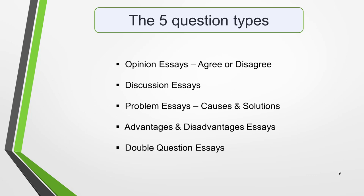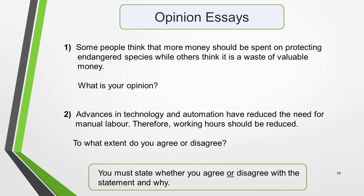Each of the 5 different types of Task 2 questions requires a different structure and slightly different language to create a high-scoring essay. Here are the 5 different types of essays again, with examples to illustrate the difference between them. We'll start with opinion essays. This type of question clearly asks your opinion on the topic, although the language could vary. Example 1: 'Some people think that more money should be spent on protecting endangered species, while others think that it's a waste of valuable money. What is your opinion?' Example 2: 'Advances in technology and automation have reduced the need for manual labour. Therefore, working hours should be reduced. To what extent do you agree or disagree?' In opinion essays you must state whether you agree or disagree with the statement, and why.